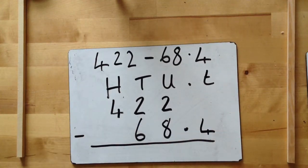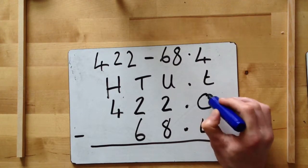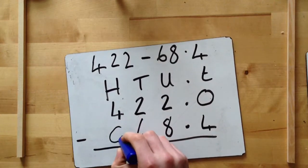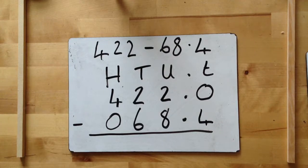Now we've got it all lined up, but the second rule: we must put zeros in the gaps. So here I've got a gap under the hundreds. I've got a gap. Now we are ready to do our subtraction.